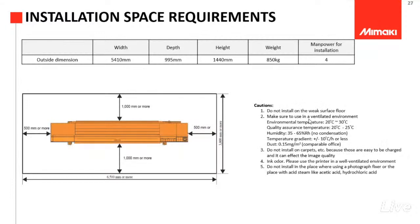Ini kira-kira dimensi ruang yang dibutuhkan untuk mesin ini. Meskipun lebar mesinnya itu 5,5 meter, tapi tetap membutuhkan lebar ruangan sekitar 6,5 meter, supaya ada space di sebelah kanan — baik itu untuk sirkulasi operator melakukan pekerjaan ataupun untuk teknikal ketika ada perawatan. Terus depan belakangnya juga setidaknya ada jarak sekitar 1 meter.